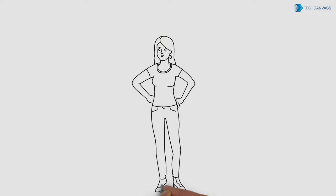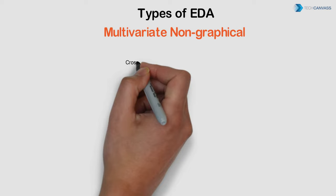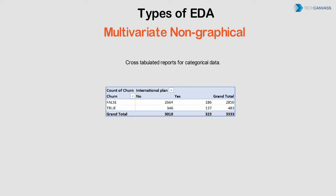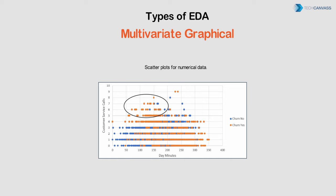Anna is happy that they are getting so much information already. They move on to multivariate non-graphical analysis, where two or more variables are analyzed together. Cross-tabulated reports of two or more variables fall into this category. A simple report tells them that customers who don't have an international plan are more likely to churn.